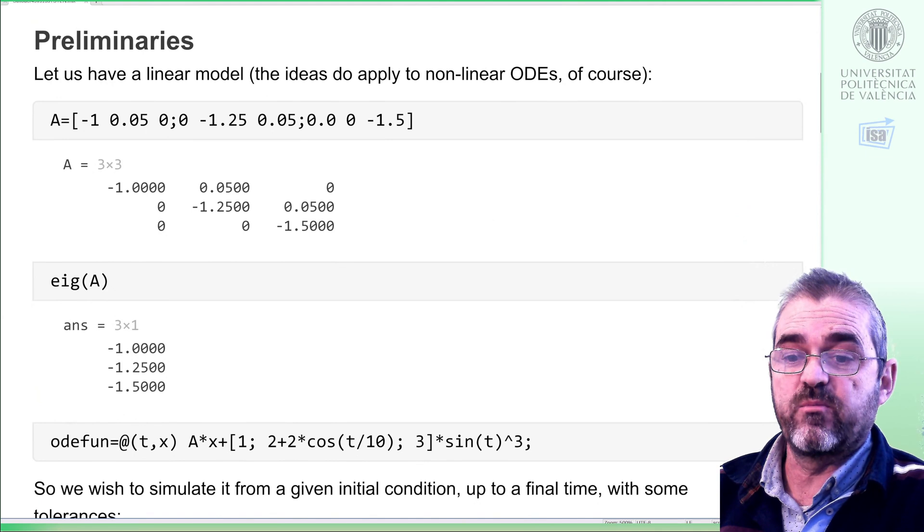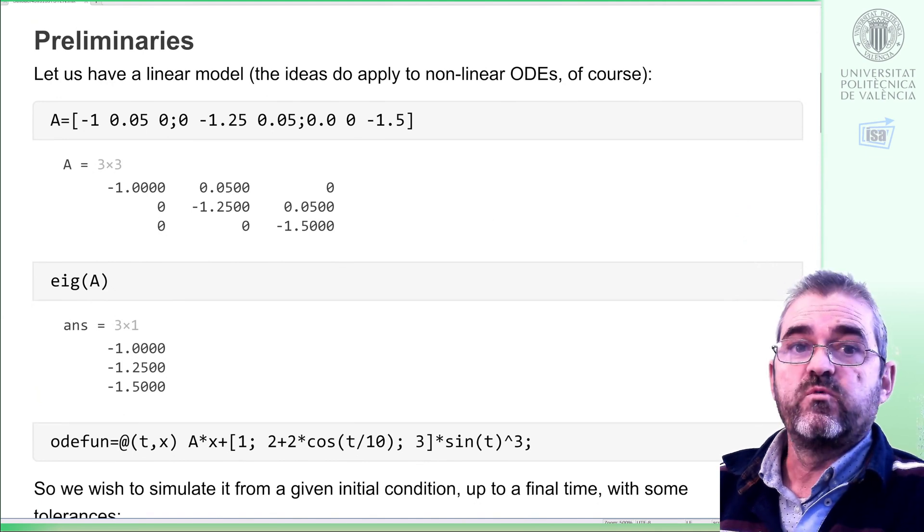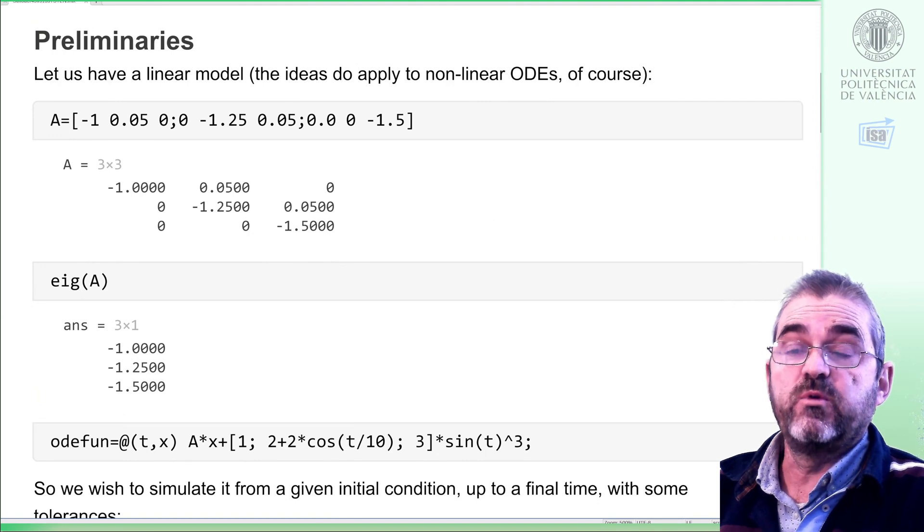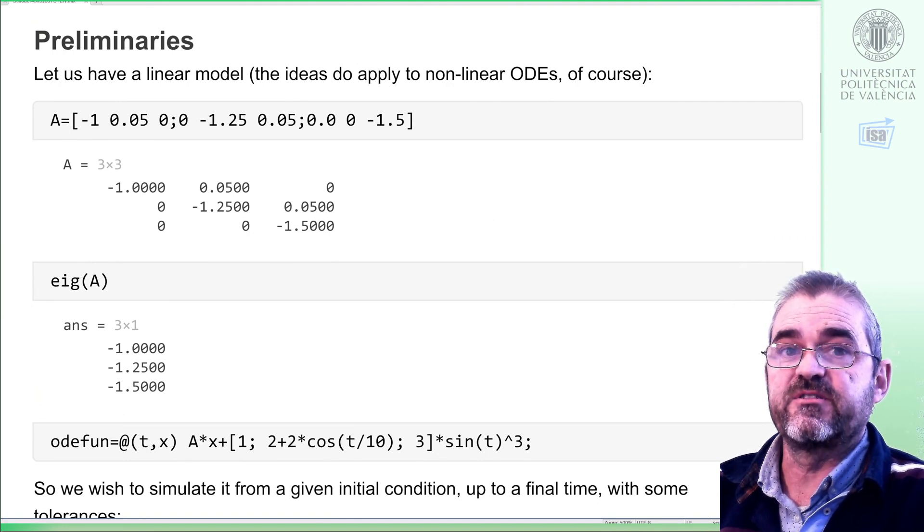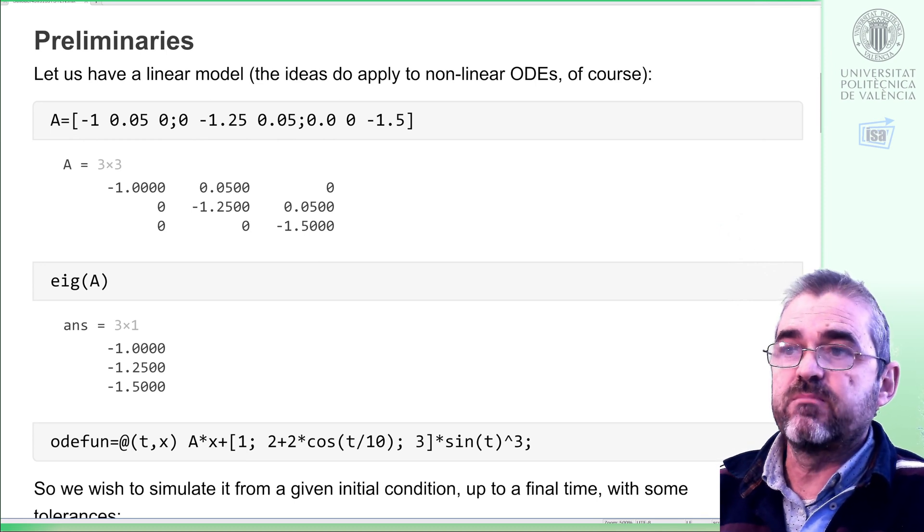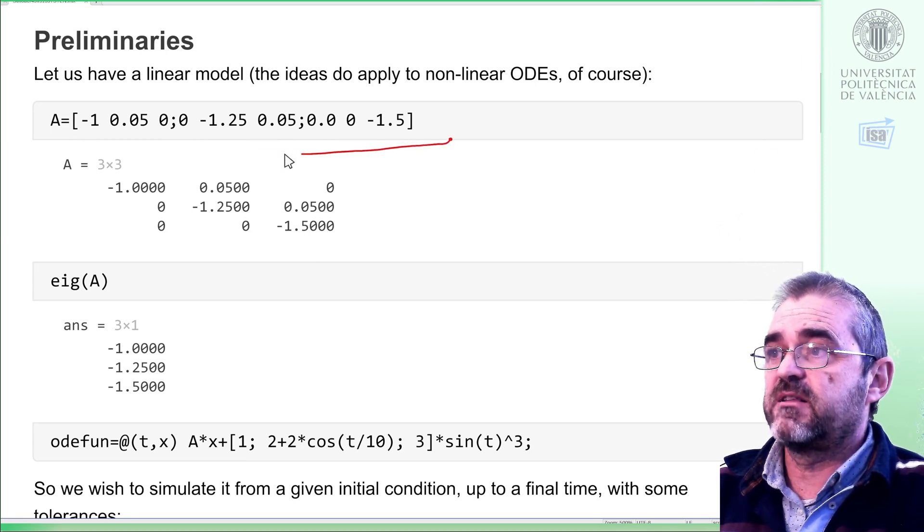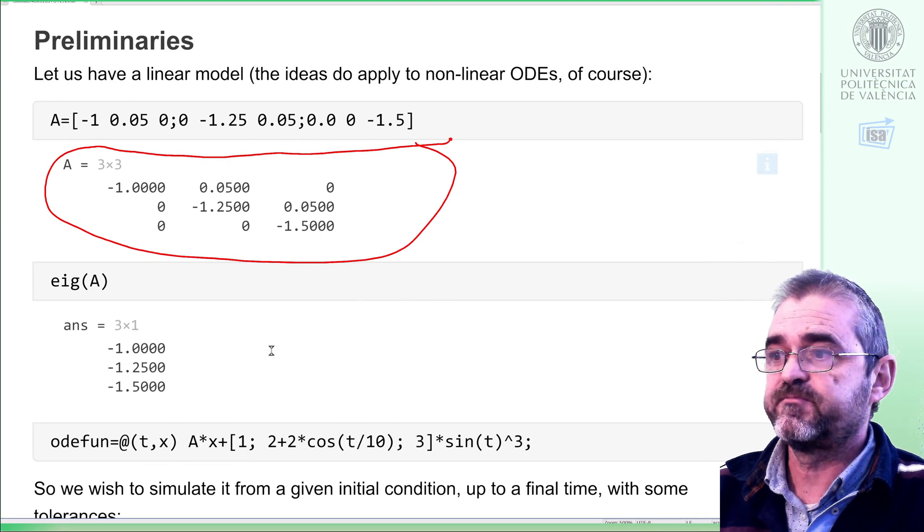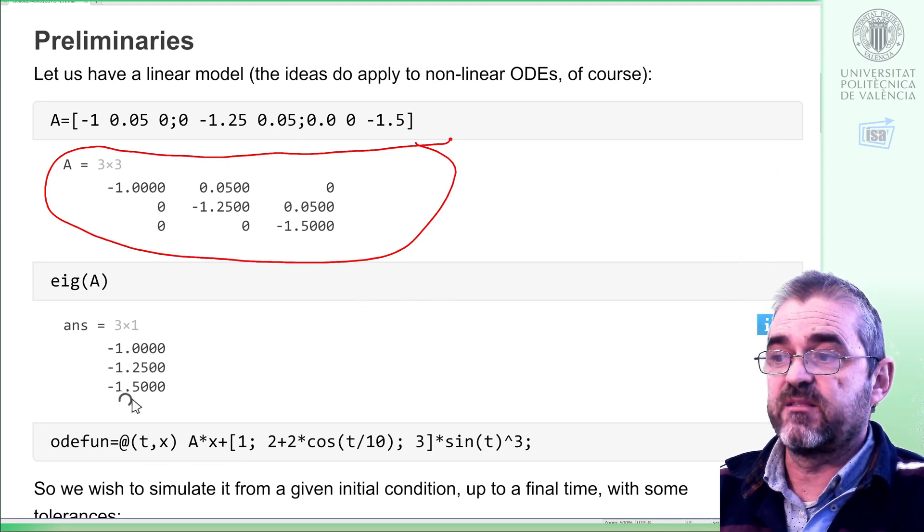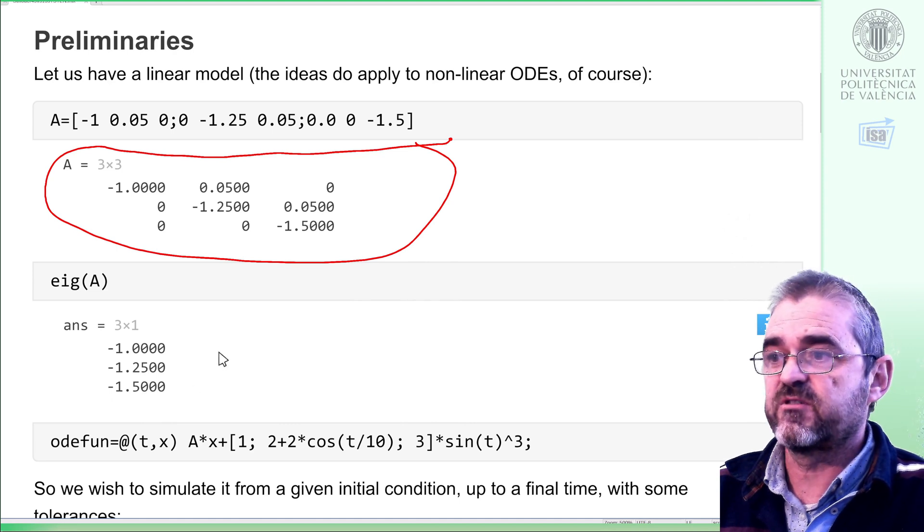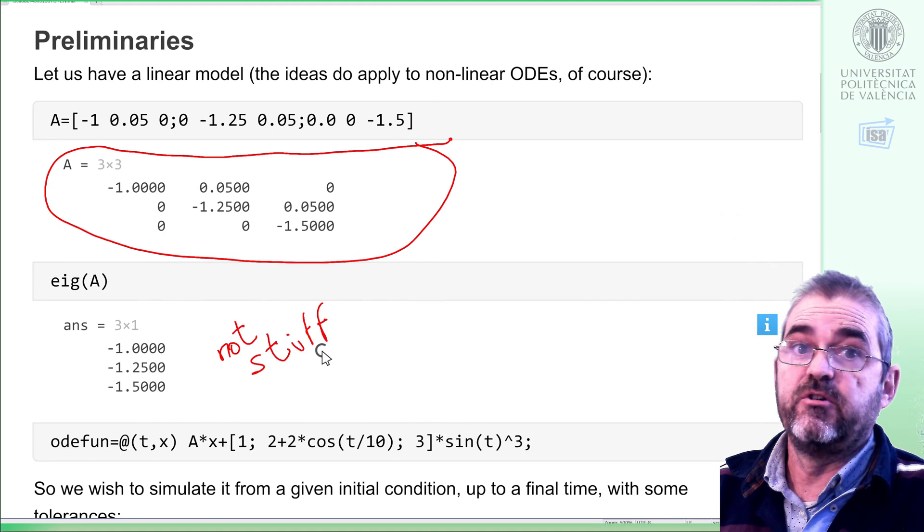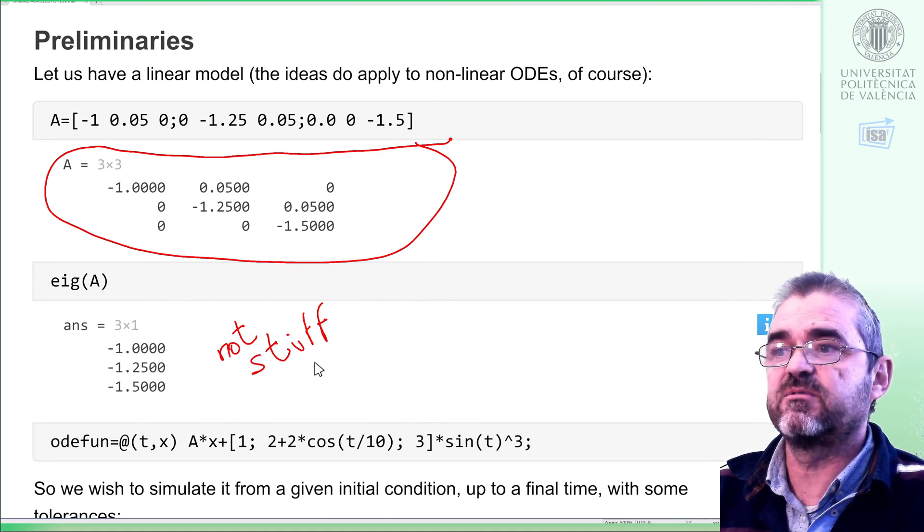So let's discuss the problem we are going to solve. We will solve a linear problem, but of course the main idea is to apply to non-linear differential equations. But let's keep things simple, and let's consider this A matrix, which has three poles, at minus 1 and minus 1.5, so this will be not stiff, not compared to our second example.